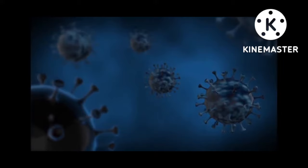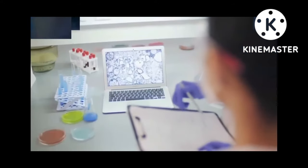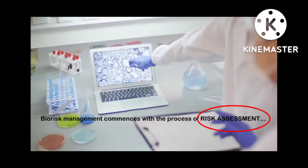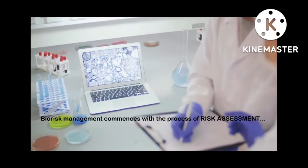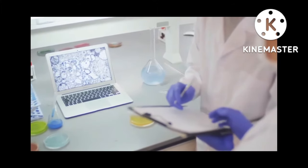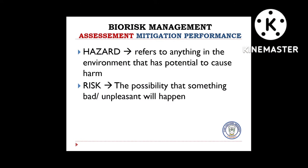In Biorisk Management, the first key component and initial step in implementation is risk assessment. This includes the identification of hazards and characterization of risks that are possibly present in the laboratory. A hazard refers to anything in the environment that has the potential to cause harm, while risk is generally defined as the possibility that something bad or unpleasant, such as an injury or loss, will happen. In order for a risk to occur, there must be a situation for the hazard to cause harm.